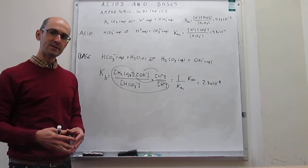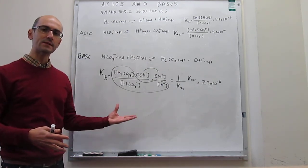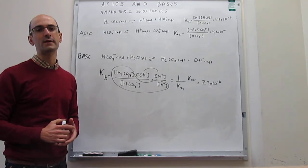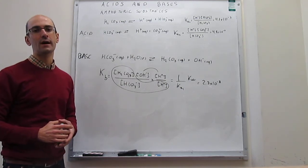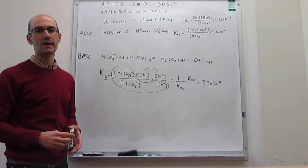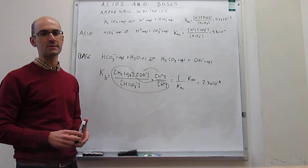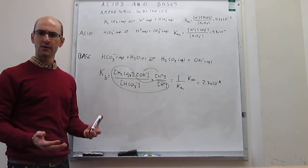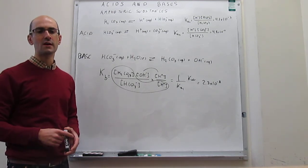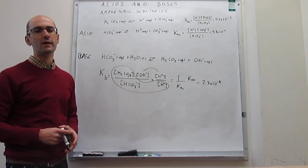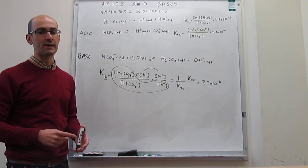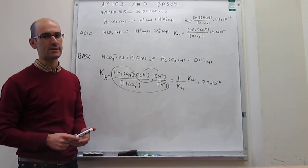To summarize: in this video we have seen how to quantify the acid-base behavior of amphoteric substances, and how you can determine — based on the conditions — whether such a substance will behave as an acid or as a base.